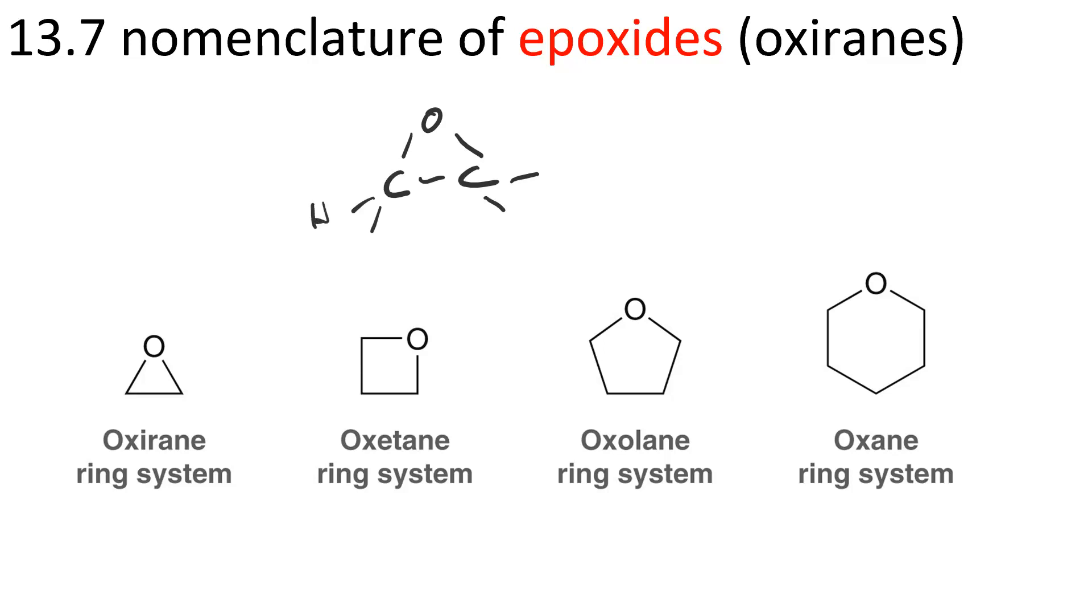And we can have H's or R groups. So a three-membered cyclic ether is an oxirane, also known as an epoxide.